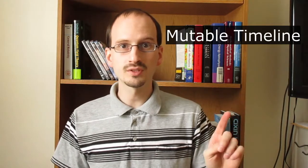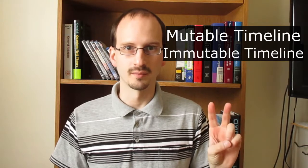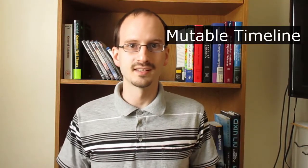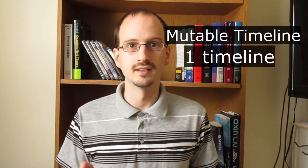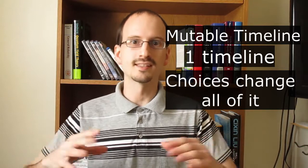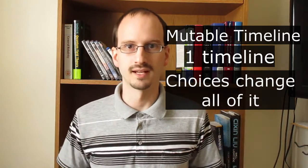There are three main interpretations in science fiction of how time travel works. The mutable timeline, the immutable timeline, and the parallel timelines. The mutable timeline says that there's one timeline, and whatever you've done most recently changes the entire timeline to reflect that.